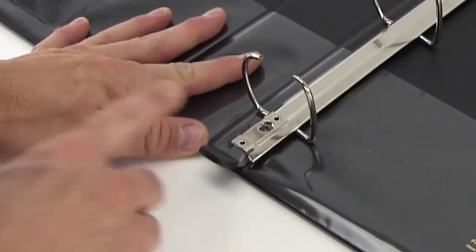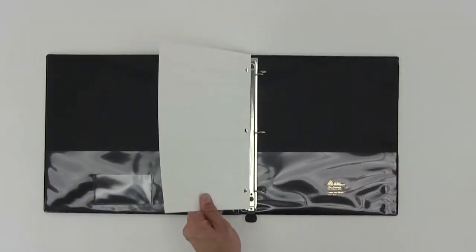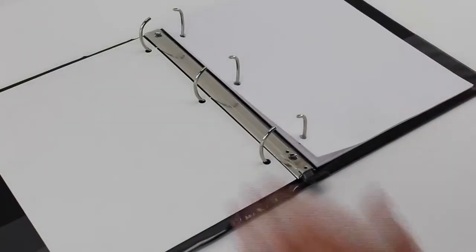It's called one-touch because one finger opens and closes the rings, making loading and unloading very simple. If you have lots of papers in large binders, this is a plus.